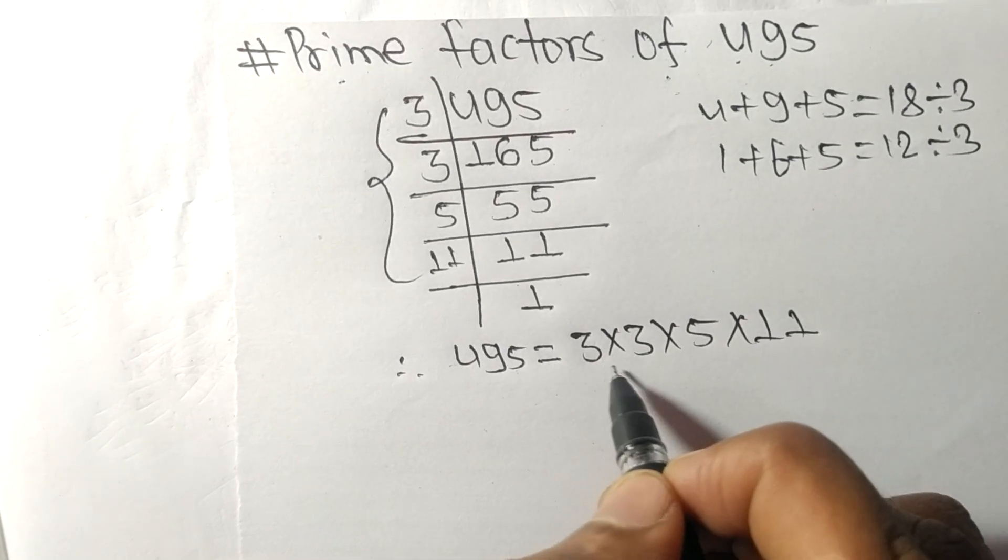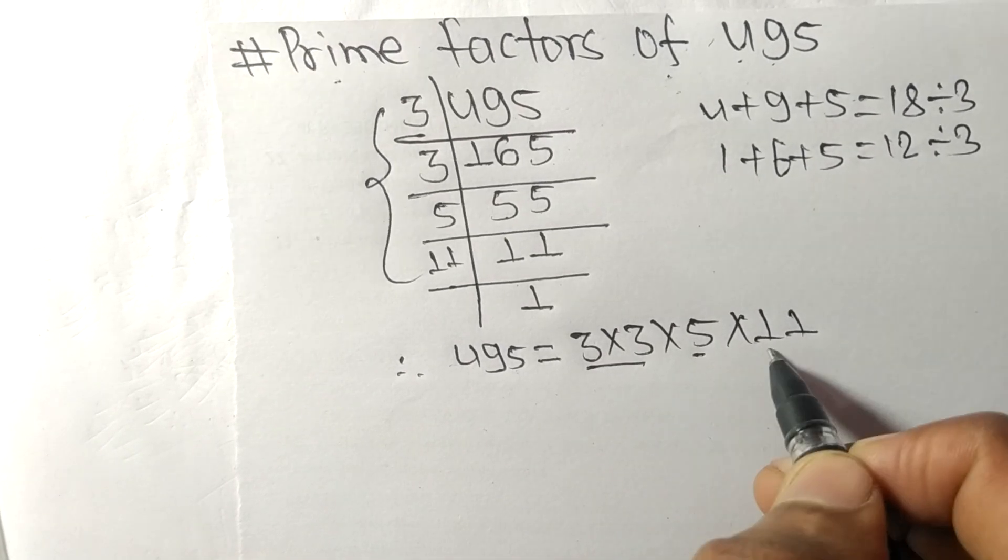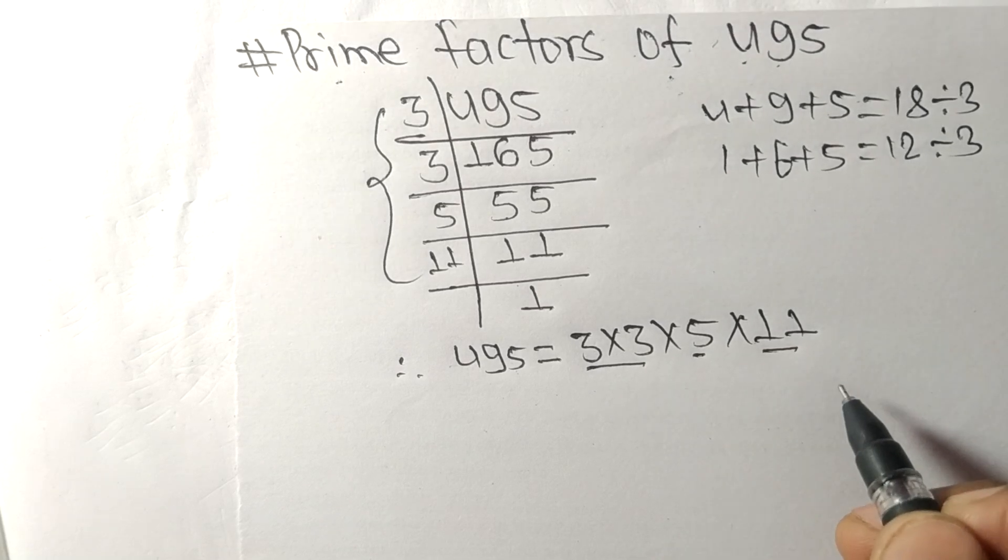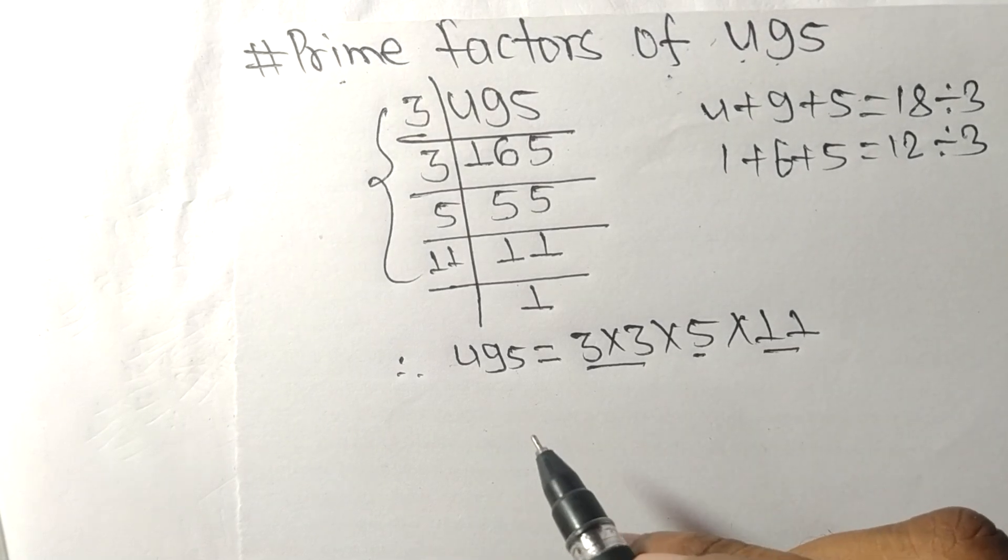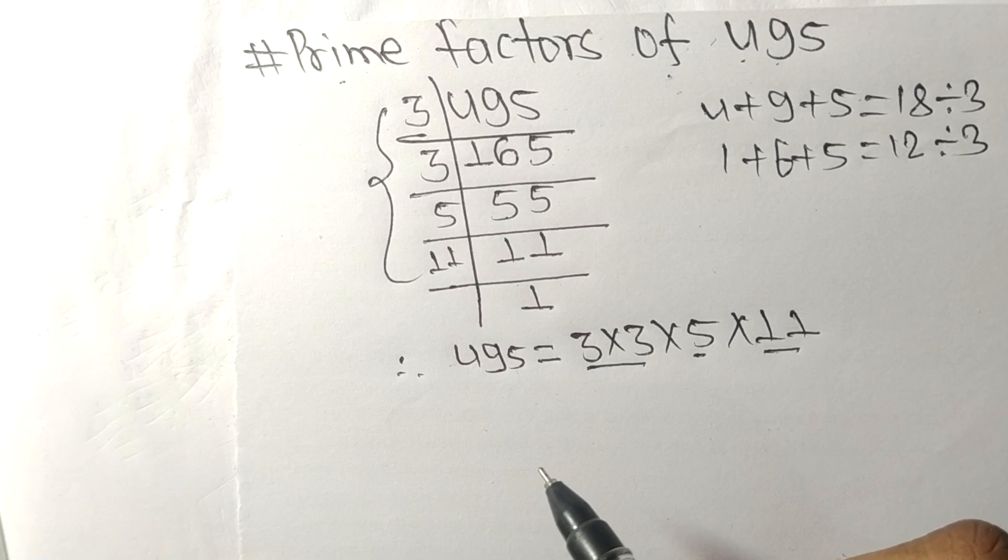11. So 3, 5, and 11 are the prime factors of 495. So this much for today, and thanks for watching.